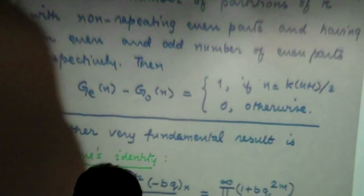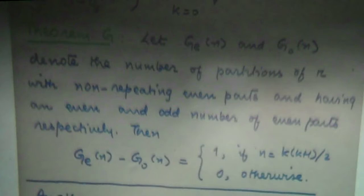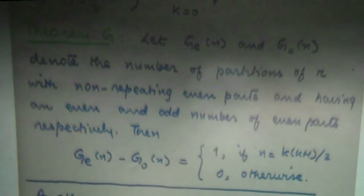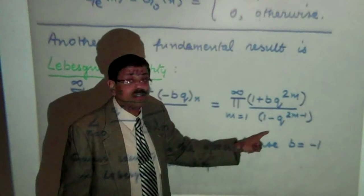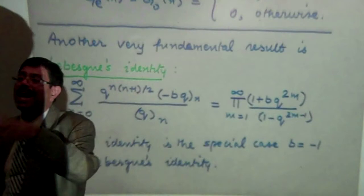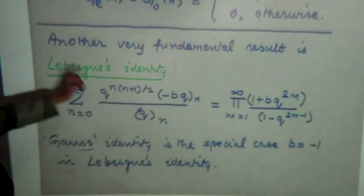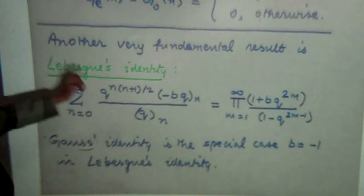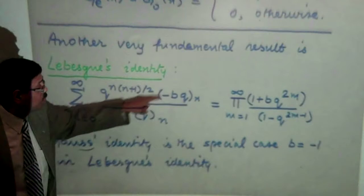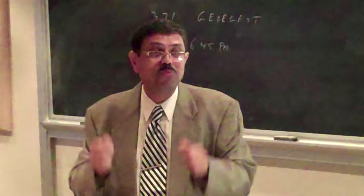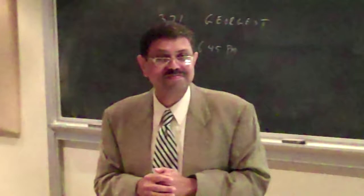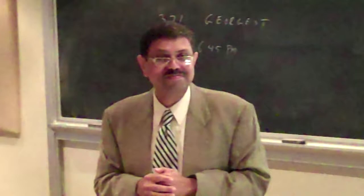Just as we viewed the Euler pentagonal numbers theorem as a special case of the Sylvester identity, one can view the Gauss triangular series identity as a special case of another very fundamental identity in the theory of partitions called LeBain's identity, which I have written down here. We have the product which is the generating function for partitions in which the evens don't repeat, and this parameter b keeps track of the number of evens. There is a series: product of (1 plus bq)(1 plus bq squared)...(1 plus bq to the n) over a denominator. If I put b equal to minus 1, these two terms cancel and I end up with a triangular series. But as an entering student in partition theory, I asked: what does LeBain's identity say as a partition theorem?